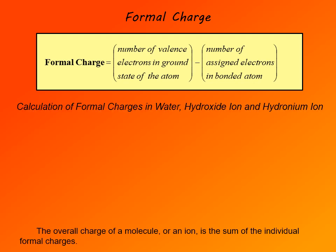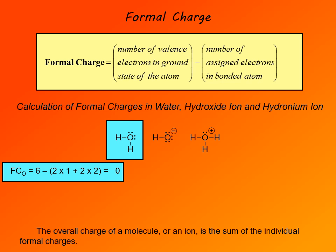Here we can look at some very simple examples: formal charges in water, hydroxide ion, and hydronium ion. In each case we look at the formal charge of oxygen; all hydrogen atoms have a formal charge of zero. For water, formal charge on oxygen is 6 (valence electrons in ground state) minus: 2 bonds give 1 electron each to oxygen, so 2×1 = 2; plus 2 free electron pairs, so 2×2 = 4. That gives 6 minus 6 = 0. Formal charge on oxygen in water is 0.